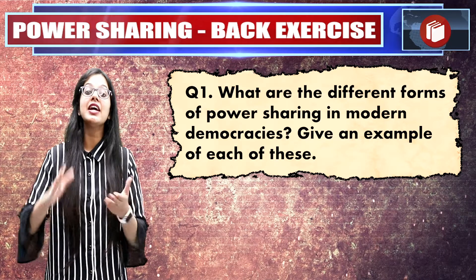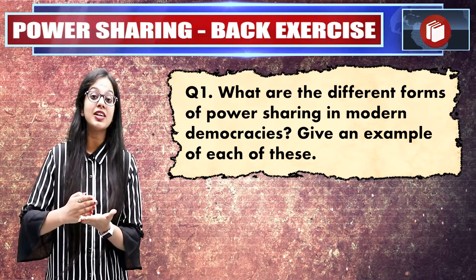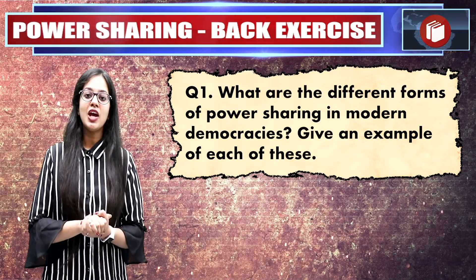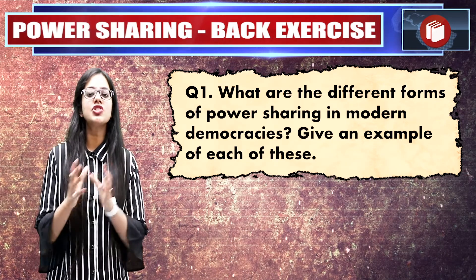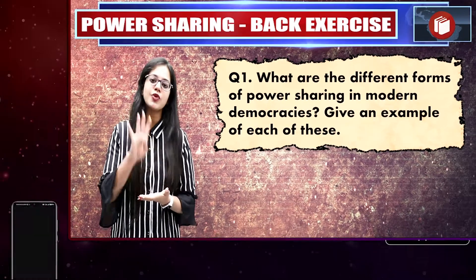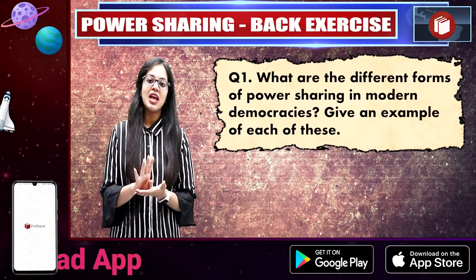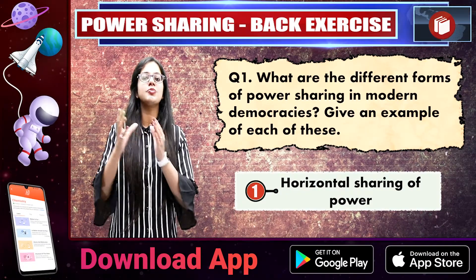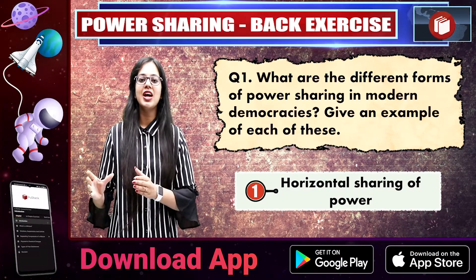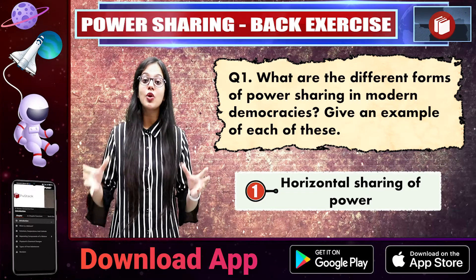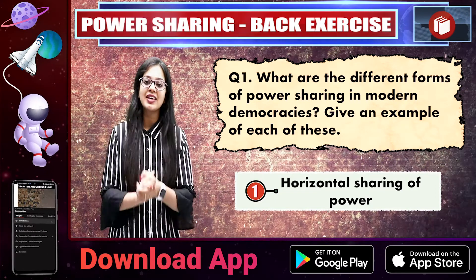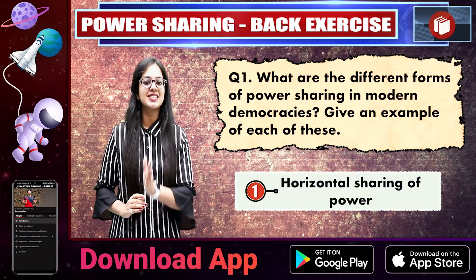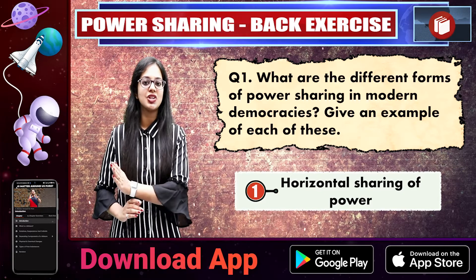We need to tell how many ways to share power. There are four different forms of power sharing. The first form is the horizontal distribution of power — that means power sharing among the different organs of government, like the legislature, executive, and judiciary.